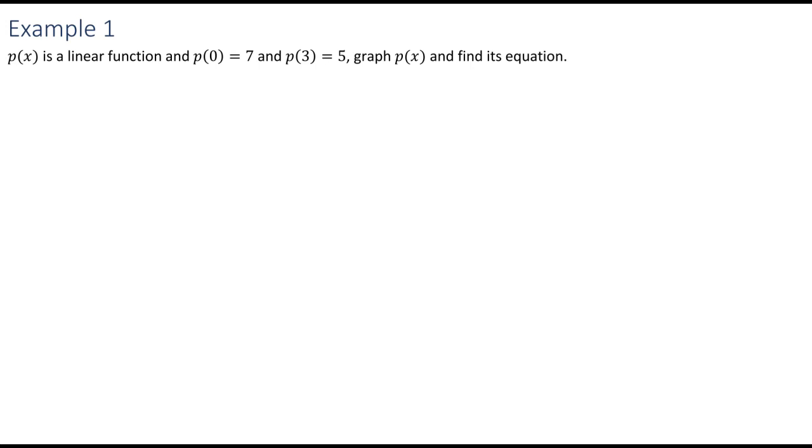So looking at this problem, I'm told that p of x is a linear function. And I'm given p of 0 equals 7 and p of 3 equals 5. And we're supposed to graph and find the equation. And I'm probably not working in that order, although you absolutely could. So whichever order you would like. Here, what we're actually being given is two points.